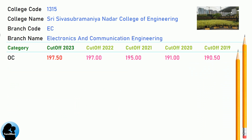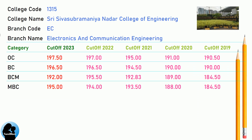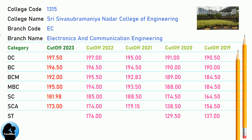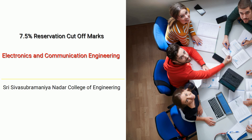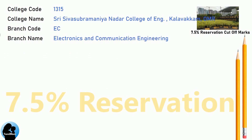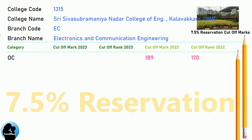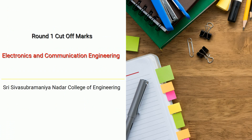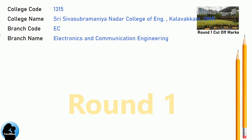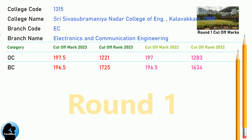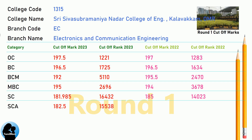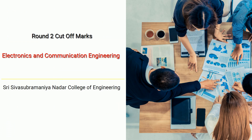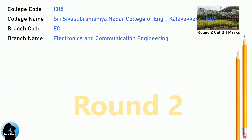DNA Cut-Off for Shree Ifsu Brahmaniya Nadar College of Engineering in M.U. Electronics and Communication Engineering. DNA 7.5 Reservation Cut-Off for Shri Ifsu Bramanya Nadar College of Engineering in Electronics and Communication Engineering. DNA Round 1 Cut-Off and DNA Round 2 Cut-Off for Shri Ifsu Bramanya Nadar College of Engineering in Electronics and Communication Engineering.